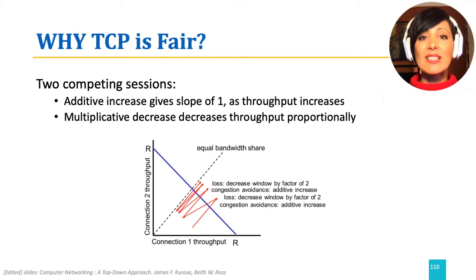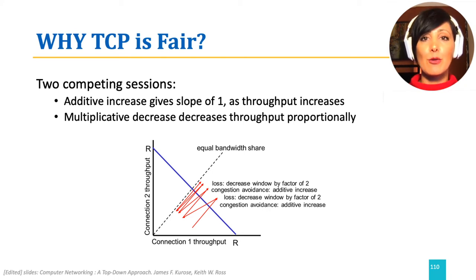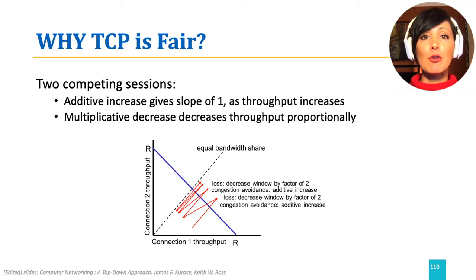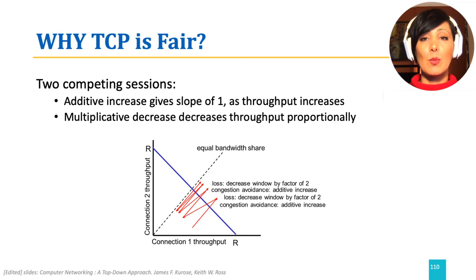This will result in flipping around a certain point in reaching the throughput, which would be half of the link capacity, as shown in the figure. Fairness is the result of probing and aiming for available bandwidth and stepping back when experiencing congestion, which is the behavior of AIMD.